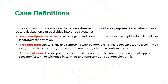What are the case definitions? A case definition is a set of uniform criteria used to define a disease for surveillance purposes. In an outbreak situation, we have three categories. The first is suspected or possible cases: clinical signs and symptoms without an epidemiological link or laboratory confirmation for the disease or infection.